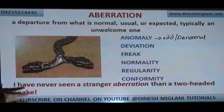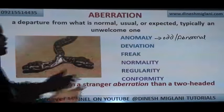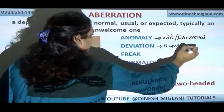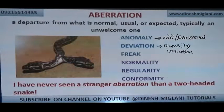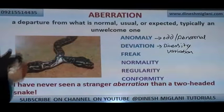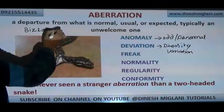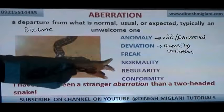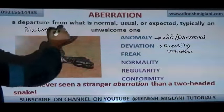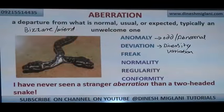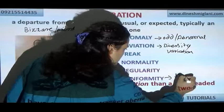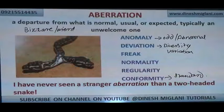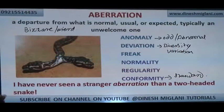Next synonym: deviation, which means variation or diversity. It can also be called freak or bizarre — extremely odd, totally uncommon. Antonyms are normality, regularity, and conformity — something which is standard. Example: 'I have never seen a stranger apparition than a two-headed snake.' Of course, it is an aberration.